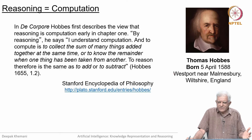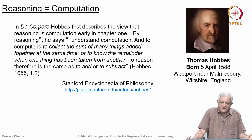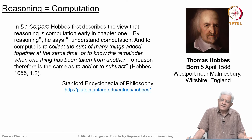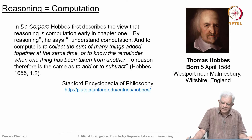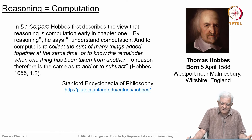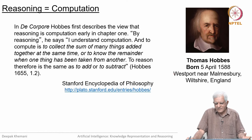Hobbes says that by reasoning he means computation — thinking is how humans compute. One must keep in mind that in the 17th century, a computer was a human being sitting at a desk with pen and paper doing mathematical calculations; they were called computers. Hobbes says that by reasoning he understands computation: to compute is to collect the sum of many things added together at the same time, or to know the remainder when one thing has been taken from another. To reason, therefore, is the same as to add or to subtract. So Hobbes is saying that reasoning is like doing mathematics.